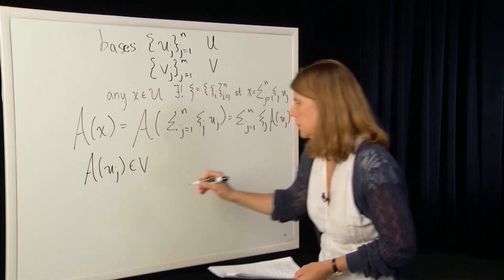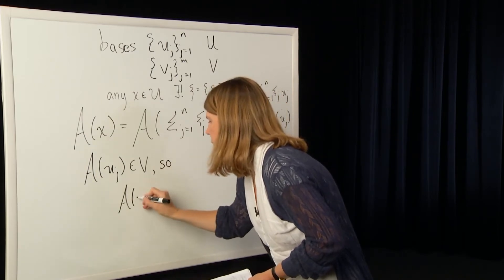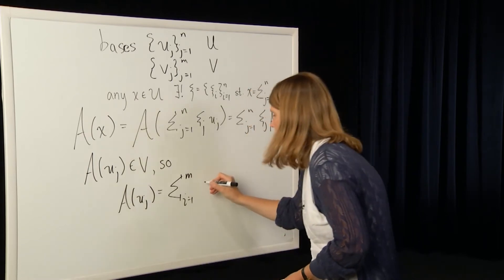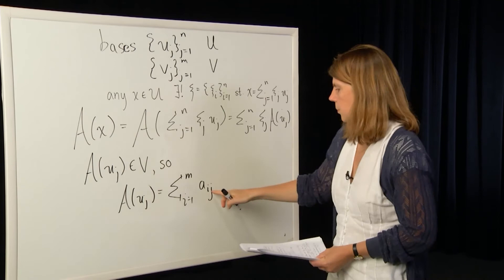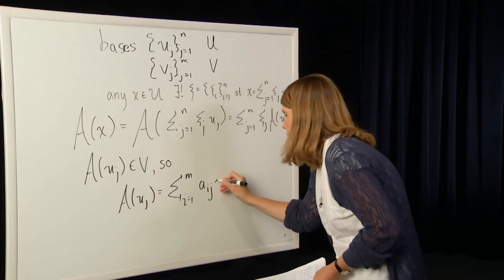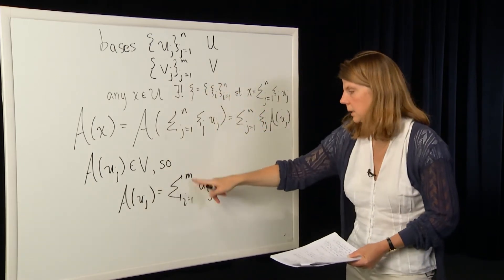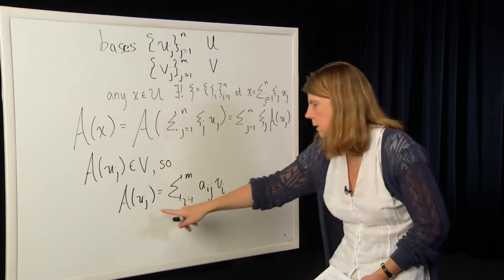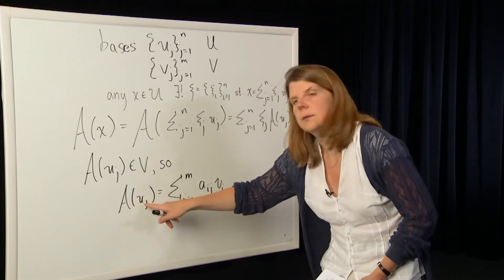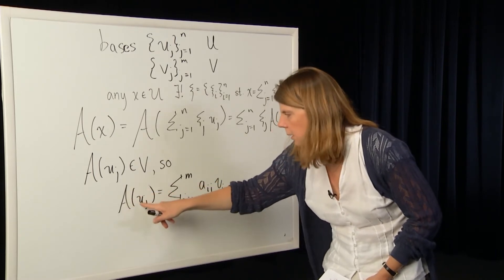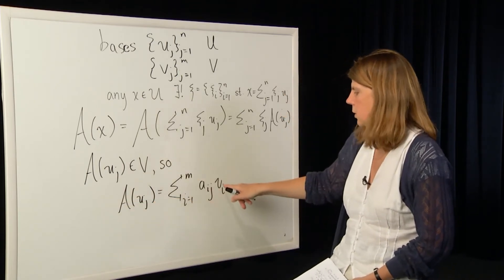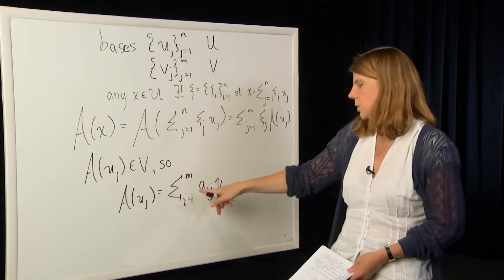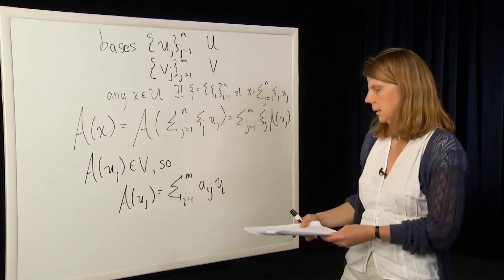Each A(u_j) is an element of V and therefore can be written in terms of the basis vectors of V using a unique coordinate set. So A(u_j) equals the summation from i equals 1 to M of A_{ij} times v_i, where A_{ij} represents the coordinates of A(u_j) written with respect to the basis vectors v_i. For example, A(u_1) gives the summation over i of A_{i1} times v_i.